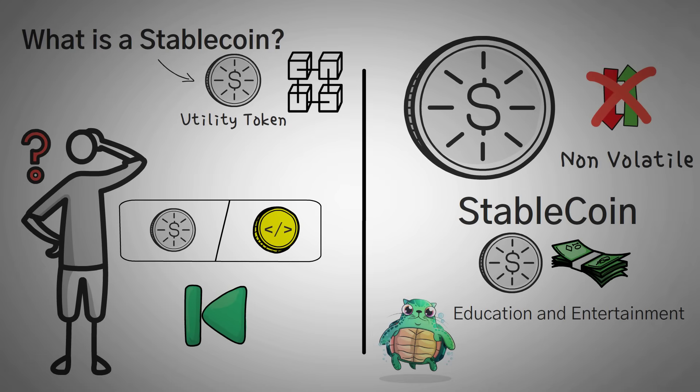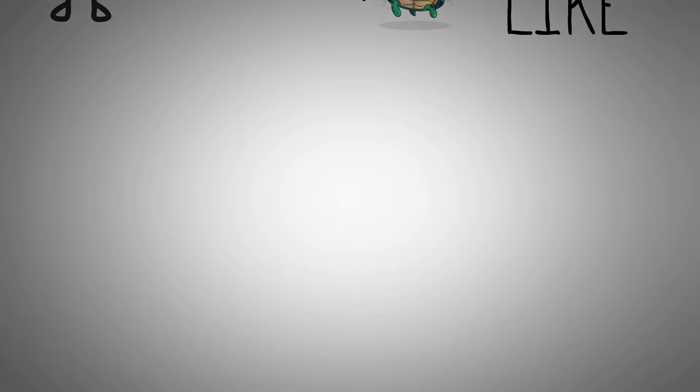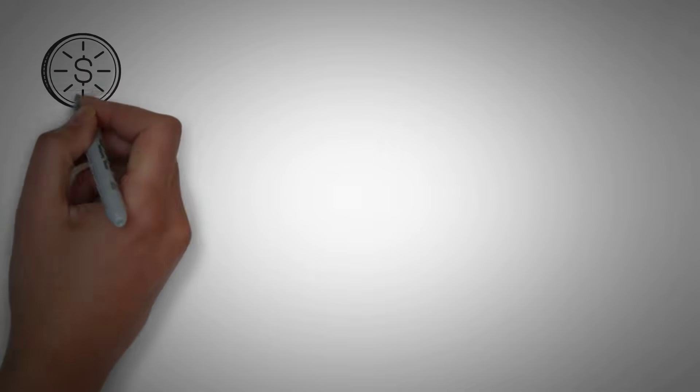By the way, if you haven't already, you should click that like button because it helps keep our motivation to create more videos stable. A stablecoin is pegged to the US dollar and should always equal one dollar, theoretically.